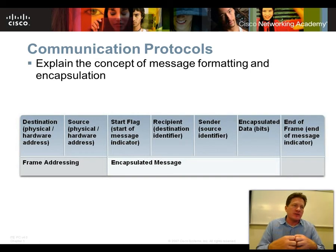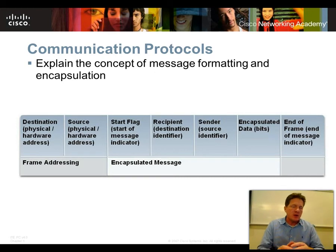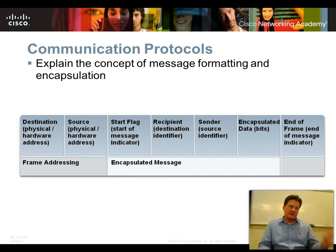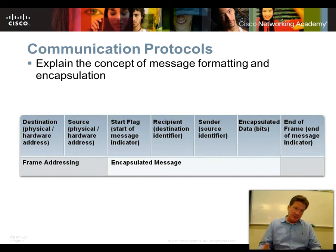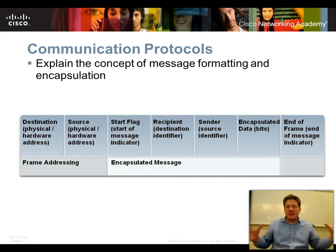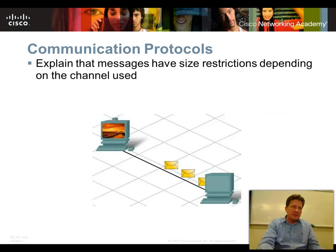Messages sent on networks are always encapsulated — put together in what is called a frame. A frame has to know the destination address and where it came from. It has to know when it started and when it stops. It also has to have information about what happens if the message gets corrupted or has an error. These are the things that happen when networking communication is put into a frame and prepared for delivery. This is called encapsulation.